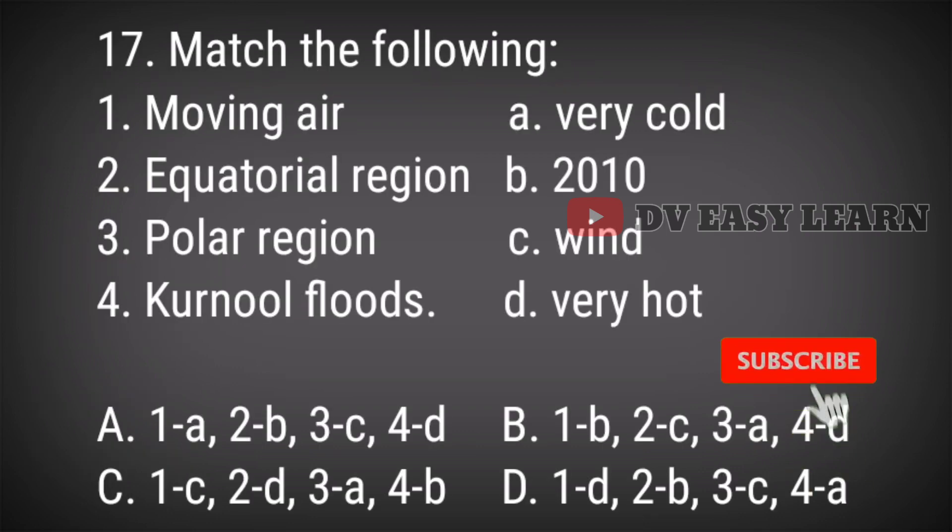Question 17: Match the following. Correct answer: 1-C, 2-D, 3-A, 4-B. Moving air is wind, equatorial region is very hot, polar region is very cold, Chennai floods 2010.